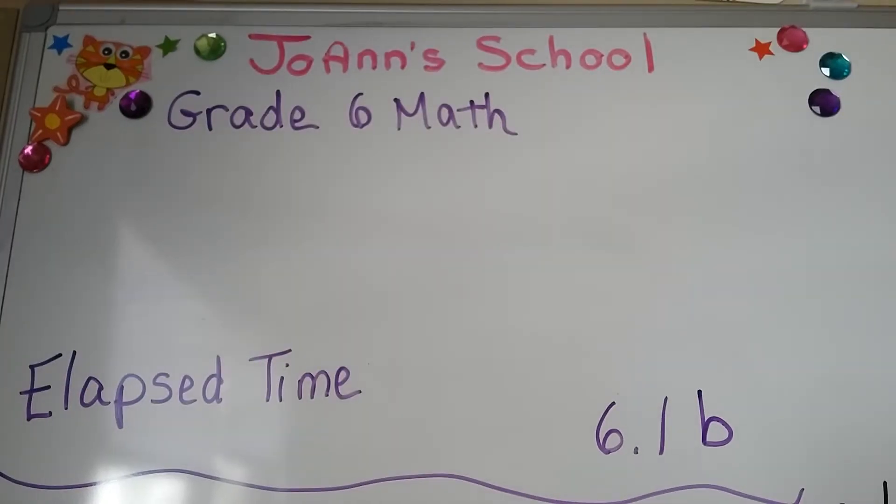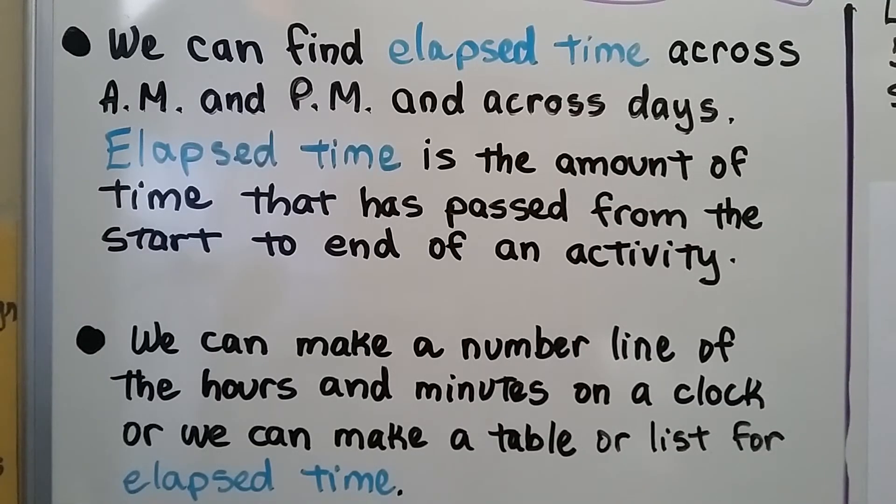Elapsed Time 6.1b. This is the second part of this lesson. 6.1a is linked in the description. We can find elapsed time across a.m. and p.m. and across days. Elapsed time is the amount of time that has passed from the start to end of an activity. We can make a number line of the hours and minutes on a clock or we can make a table or list for elapsed time.